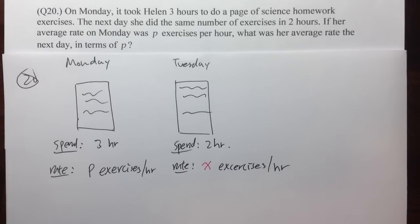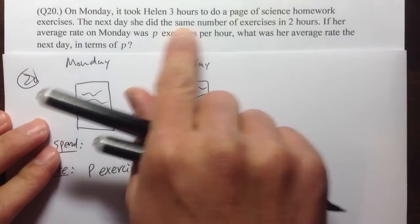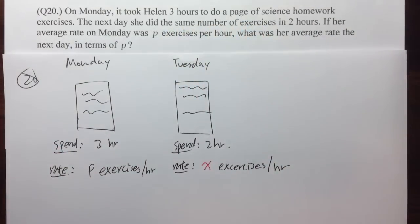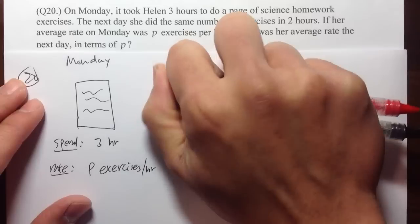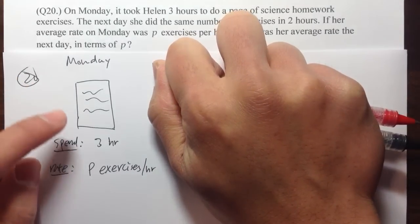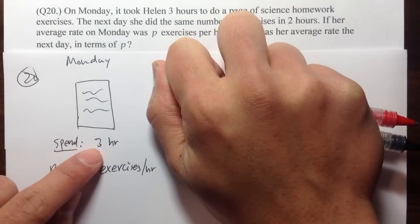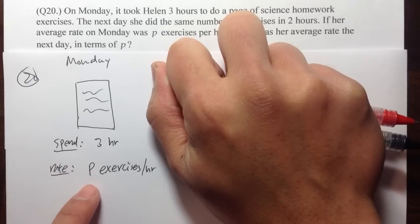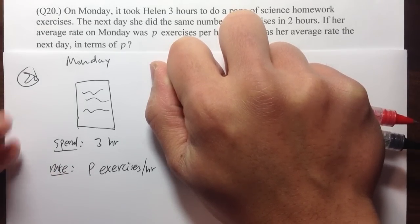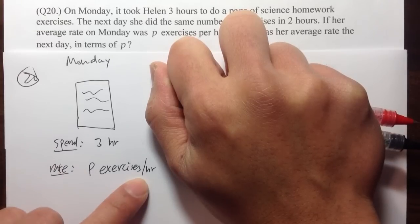There's one piece of the information that we haven't used yet. It's this one: same number of exercises. So let's say, let me give you guys an example. If you think about, just look at the Monday case. She was doing homework, and she spent three hours on the homework, and let's say her rate was, let's not look at P, let's think about P as 40. Let's say she can do 40 exercises per hour.